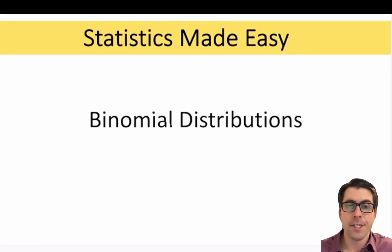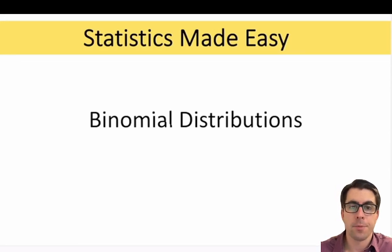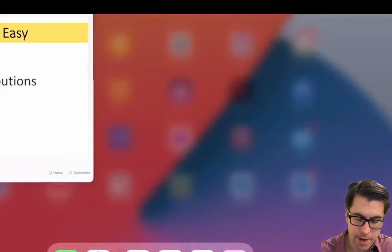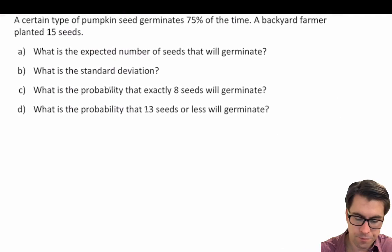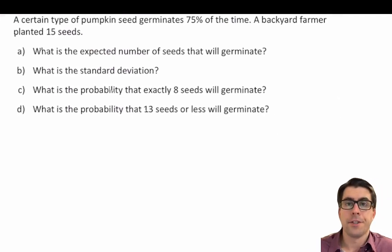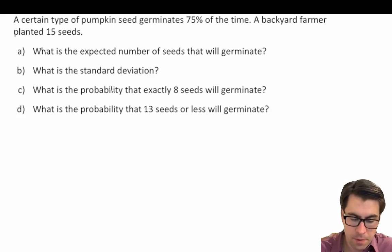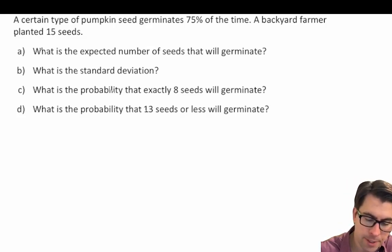In this video we're going to continue our discussion of binomial distributions and do another practice problem. A certain type of pumpkin seed germinates 75 percent of the time. A backyard farmer plants 15 seeds. What is the expected number of seeds that will germinate?